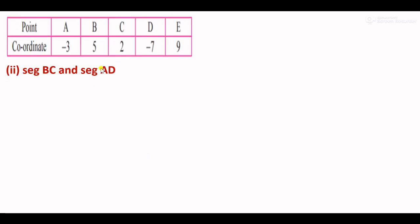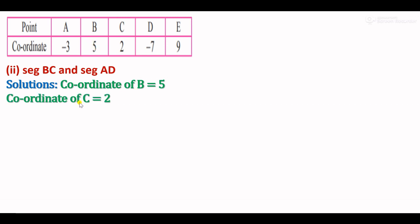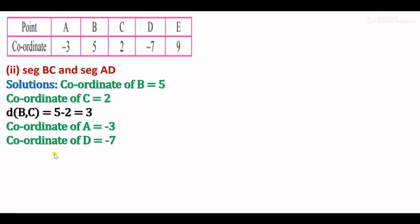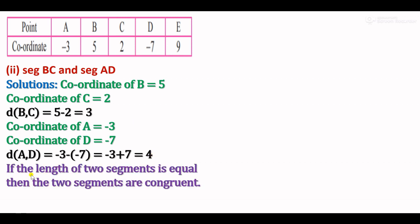Second pair: segment BC and segment AD. Coordinate of B is 5, coordinate of C is 2, so BC equals 5 minus 2 which gives 3. For segment AD: coordinate of A is minus 3, coordinate of D is minus 7. Since minus 3 is greater than minus 7, AD equals minus 3 minus (minus 7) equals minus 3 plus 7 equals 4. Distance BC is 3 and AD is 4, they are not equal, so segment BC and segment AD are not congruent.